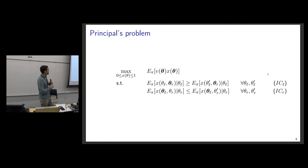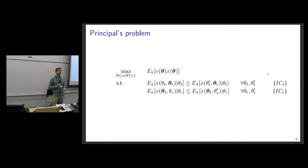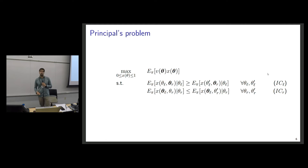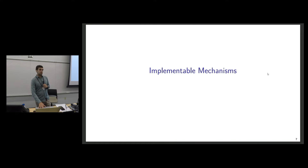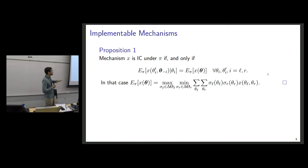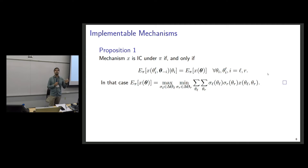The principal's problem is a linear program: choose a mechanism to maximize expected payoff subject to incentive compatibility constraints. These constraints say that agent L, by reporting truthfully, maximizes the probability that the principal chooses L given his information, while the right agent, by reporting truthfully, minimizes from his point of view the probability that the principal chooses R. This characterizes implementable mechanisms.